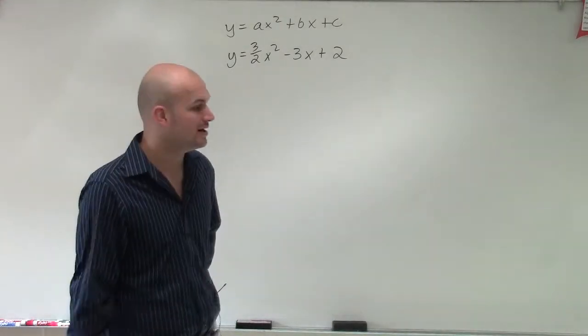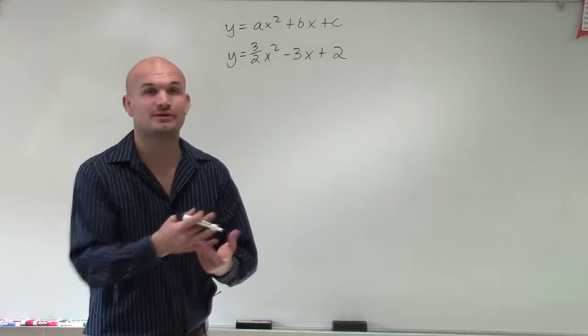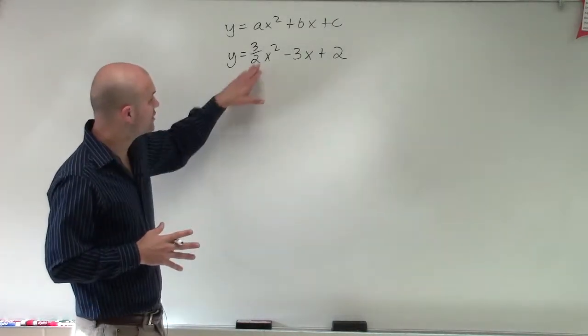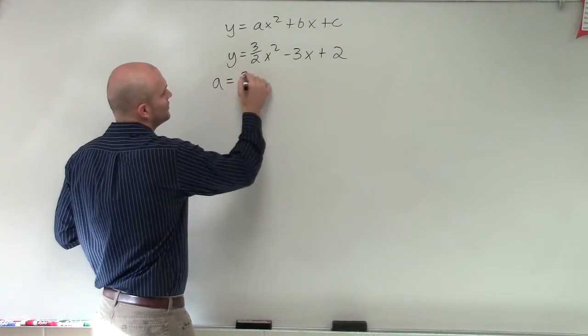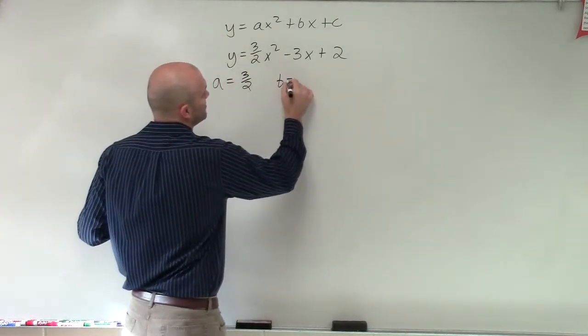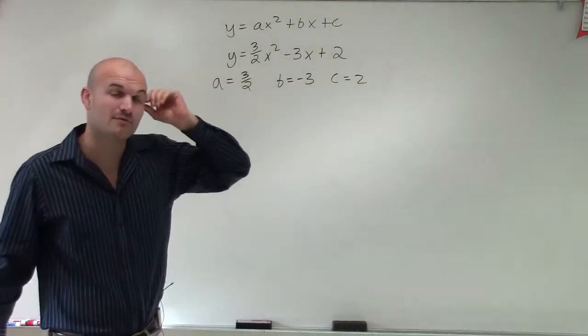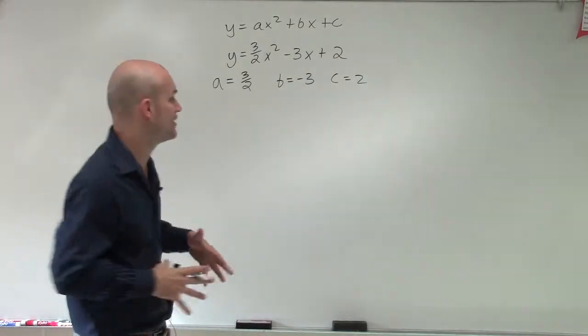Now, we're going to use the same type of process that we used before. We're going to find the axis of symmetry first, and then we're going to plot the x and y axes. Now, I do notice that I have a fraction here, and that's going to be important because when I label this, I'm going to have a equals 3½, b equals negative 3, and c equals 2. So now I have a fraction, and what we're going to do is we're going to determine how does that fraction as a really affect our graph?